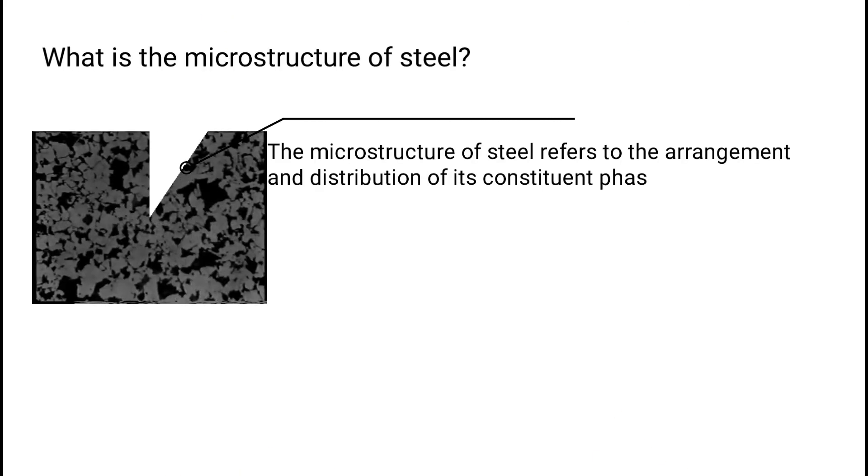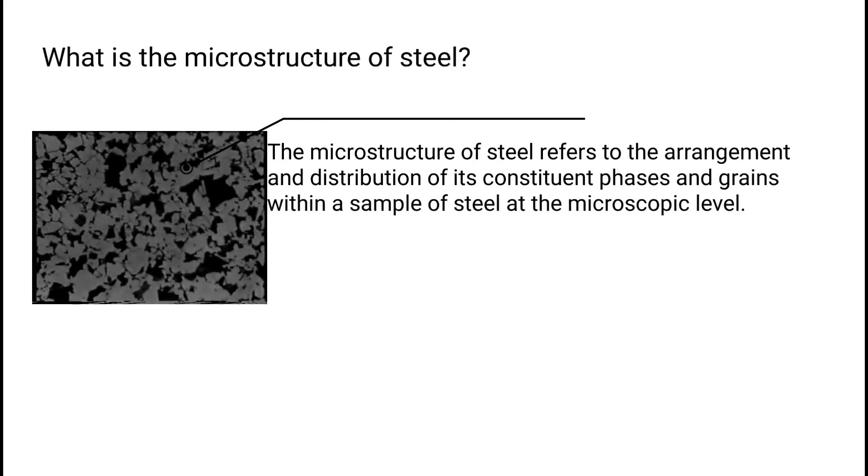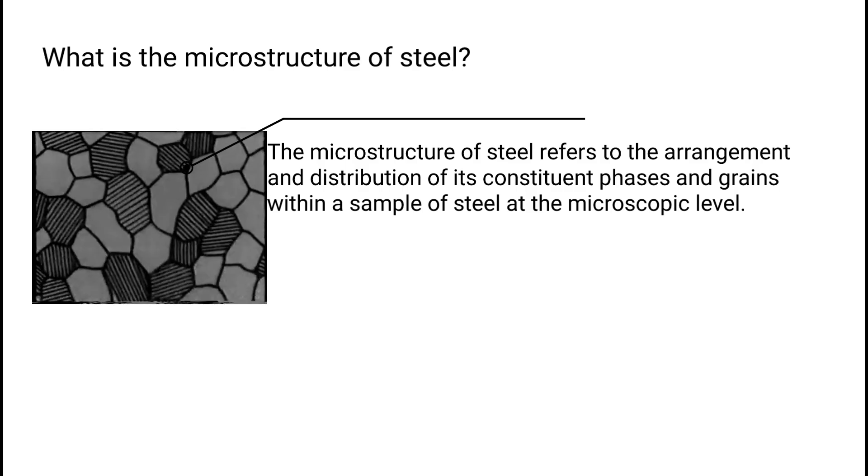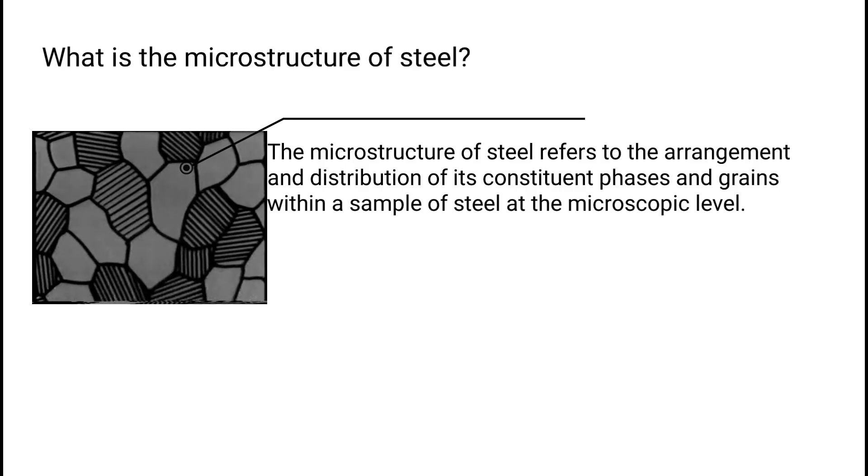What is the microstructure of steel? The microstructure of steel refers to the arrangement and distribution of its constituent phases and grains within a sample of steel at the microscopic level.